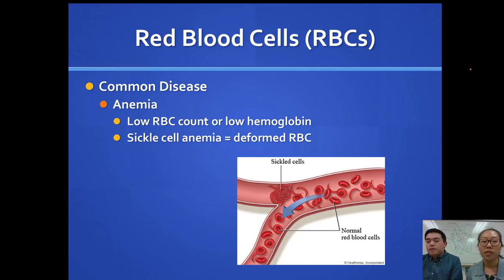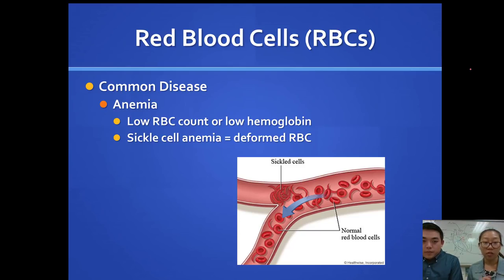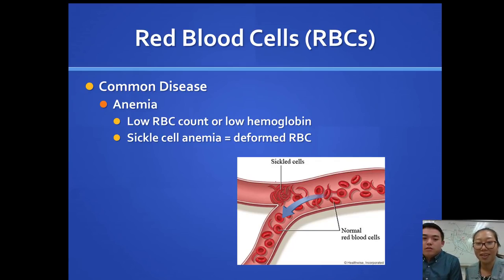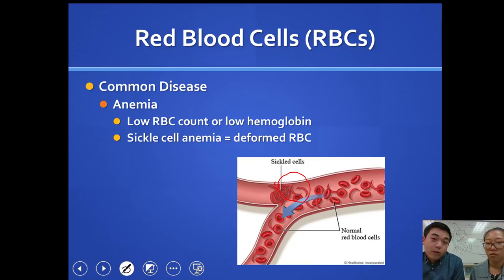One common disease of red blood cells is anemia, where red blood cells cannot transport the normal amount of oxygen. This can happen due to low red blood cell count or low hemoglobin, usually from iron deficiency. Another type is sickle cell anemia, where red blood cells are shaped like a sickle or C, and don't have enough hemoglobin to transport oxygen. If you try to donate blood, low iron levels or anemia may cause you to be deferred.